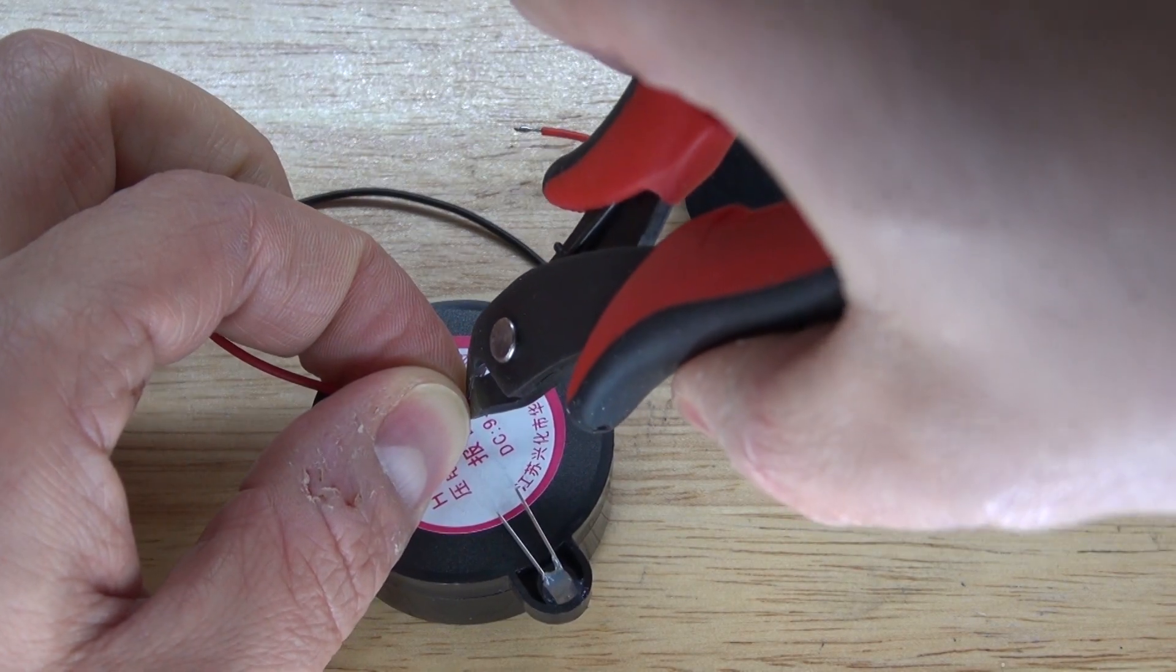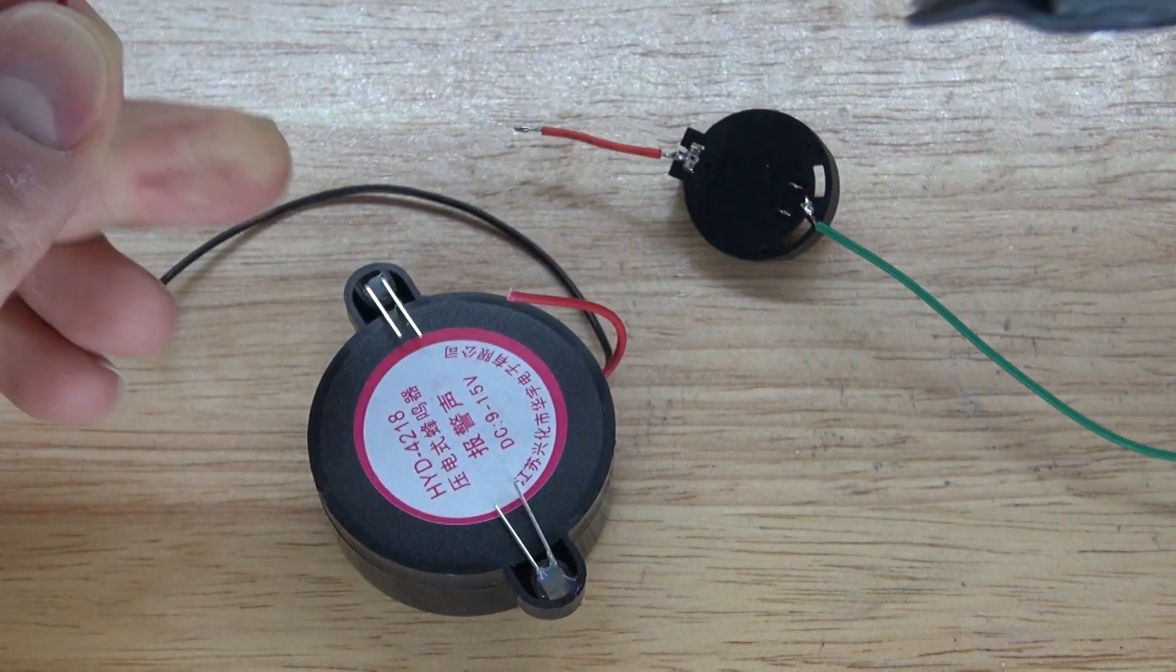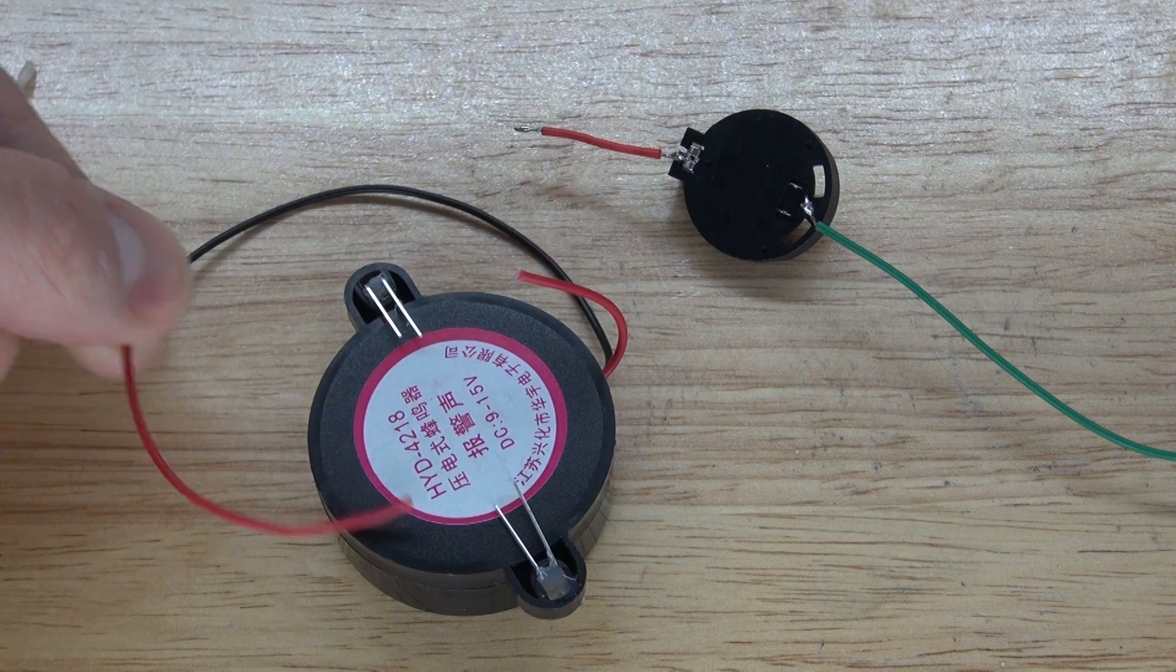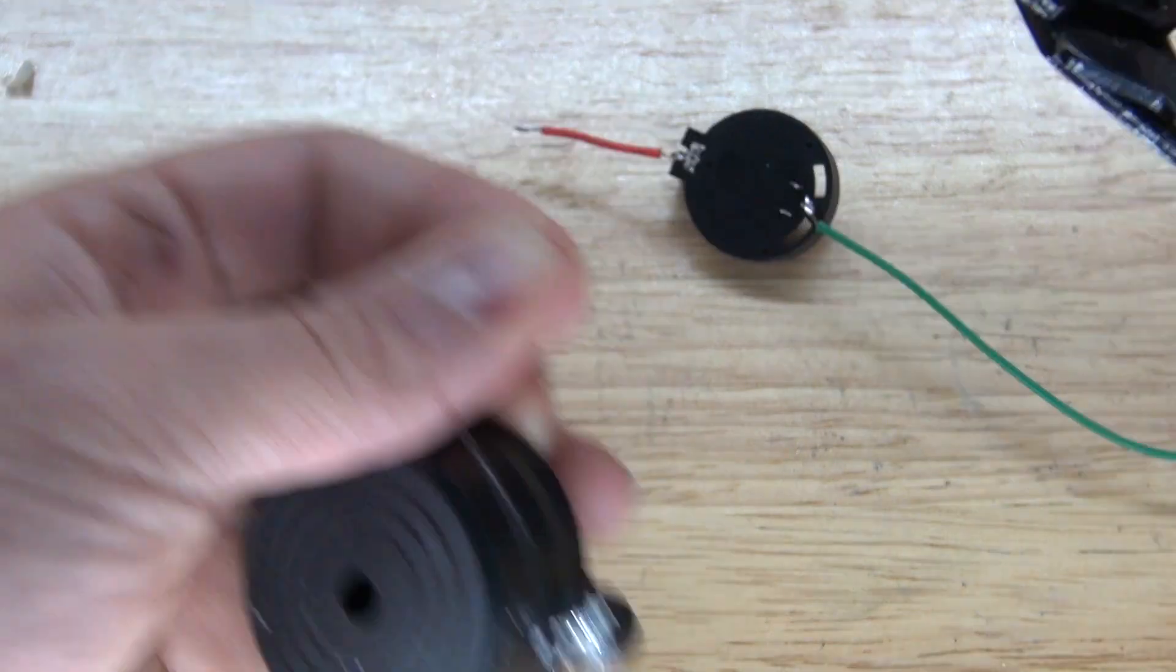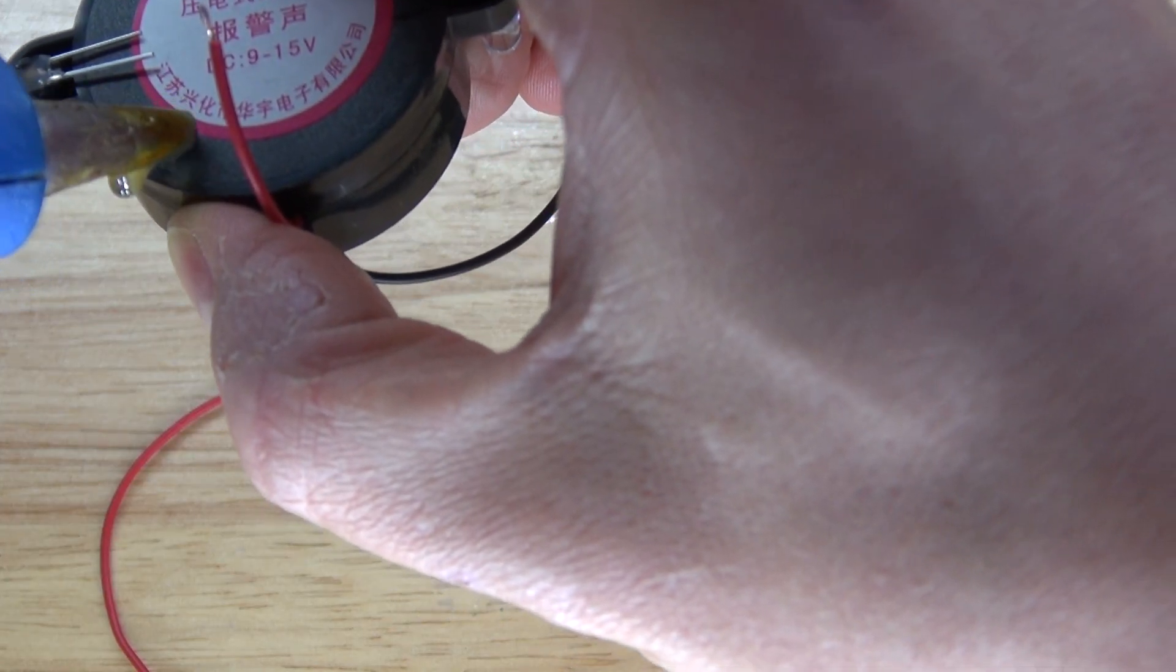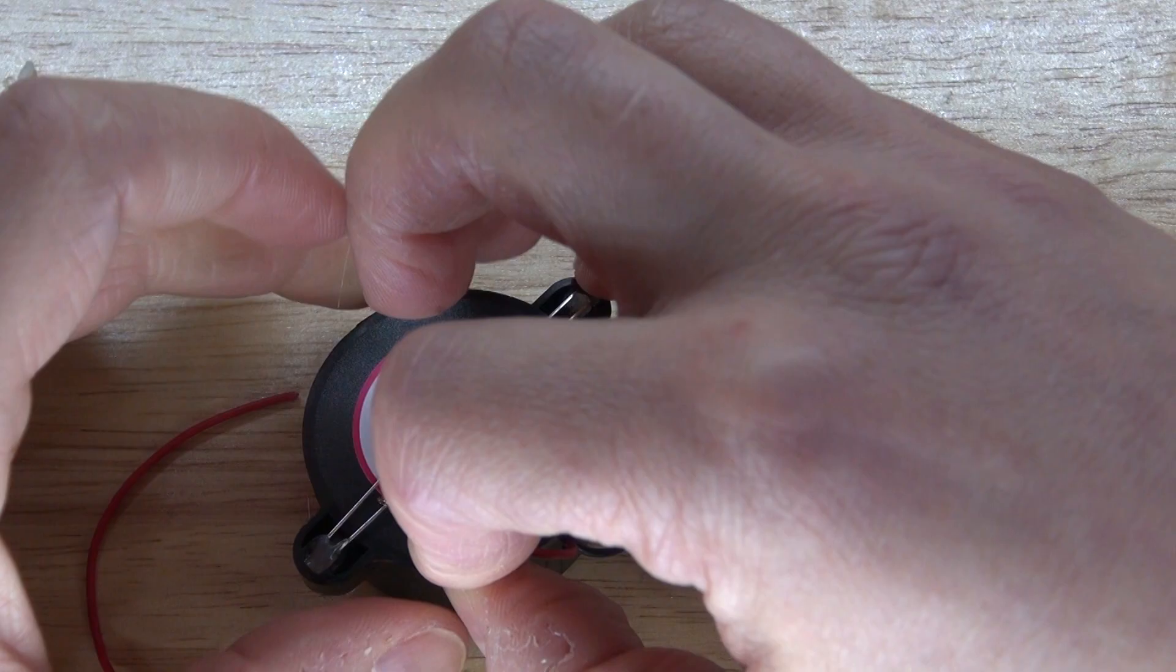Next I'm going to cut the positive wire from the buzzer and I want it to be about this length. Remove the insulation. Glue down the wire.